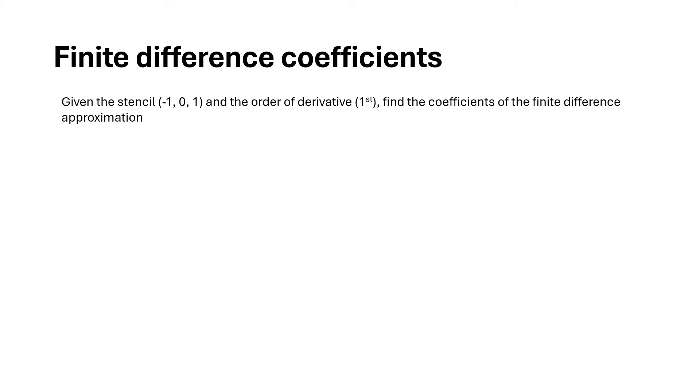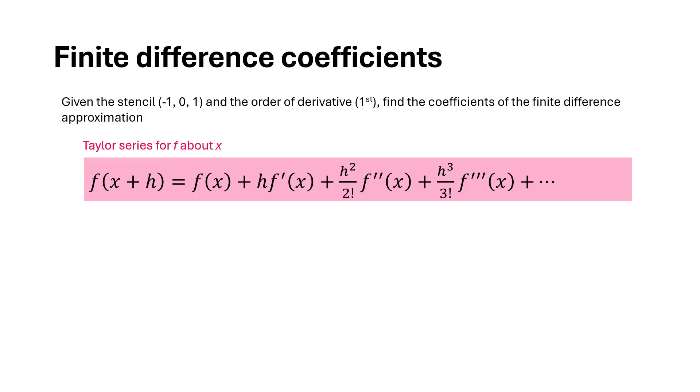Let's see how we can determine the finite difference coefficients of a first-order derivative approximation given a three-point stencil which is minus one, zero, and one. Again we'll start by writing Taylor series for f about x.